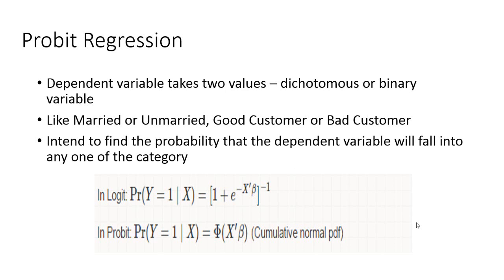Like the variable has two values like married or unmarried, status of a man, good customer or bad customer. What we intend to find out using Probit regression is the probability that the dependent variable will fall into any one of the categories.